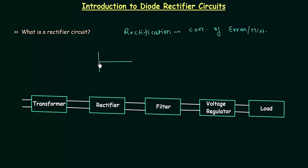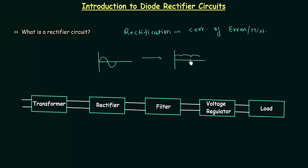For example, if this is the AC input given to a rectifier, after the process of rectification we have pulsating DC at the output. This is the pulsating DC, and to overcome these pulses we use a filter.